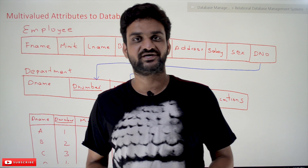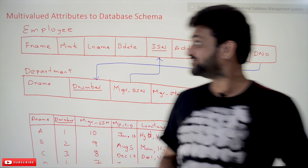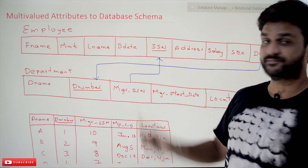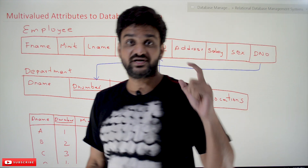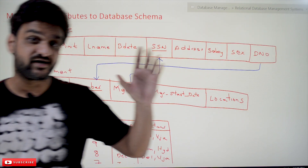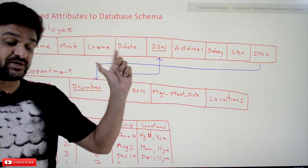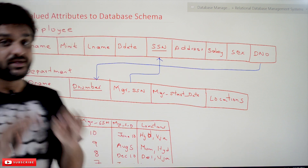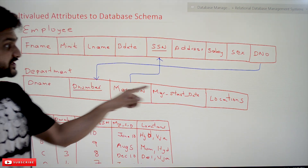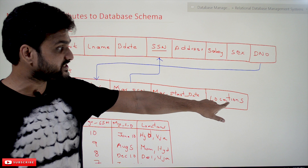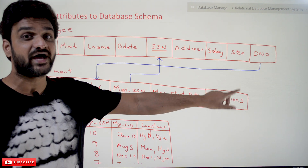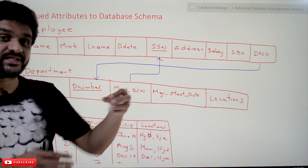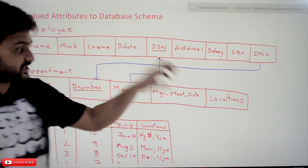Hi, welcome to Learning Monkey. I am Vikram. In this class we'll try to understand multi-valued attributes to database schema. In our first class of conversion, where we converted the 'works for' relationship between the employee and the department table into database schema, we discussed that we are taking 'location' — and this location is a multi-valued attribute.